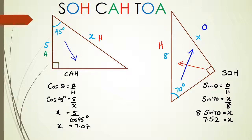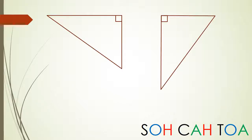So what I'm going to do in the next slide is write up the questions and ask you to try them out. We're going to have two triangles: the first with 50 degrees, x, and 8; the second with 30 degrees, x, and 7. Please pause this video right now and try these questions to see if you can get the answers.